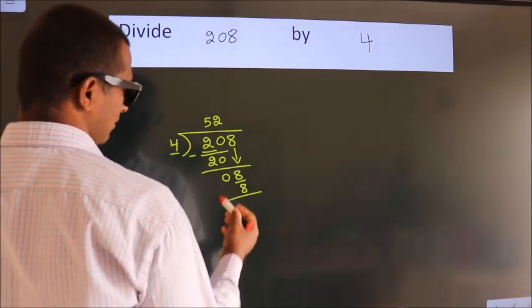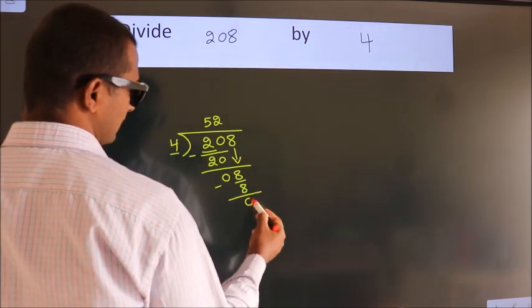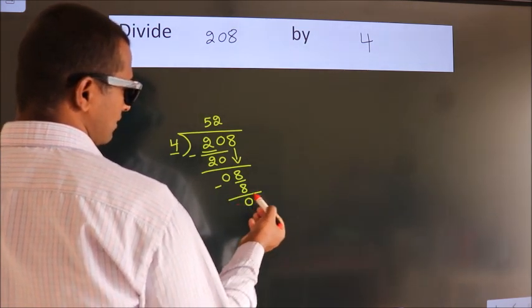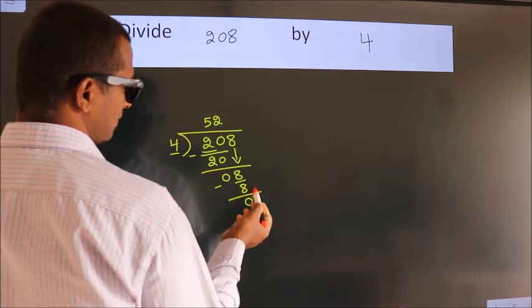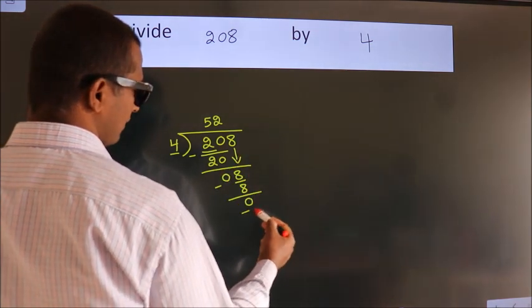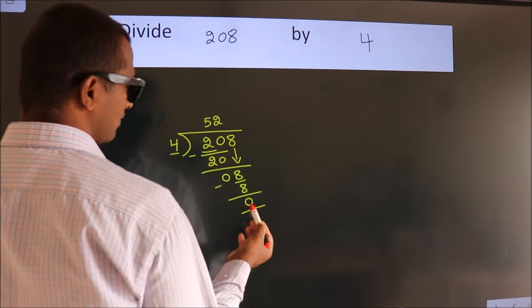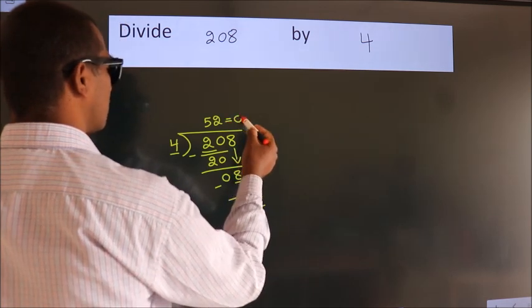4 twos are 8. Now we subtract. We get 0. After this, no more numbers to bring it down, and we got remainder 0. So this is our quotient.